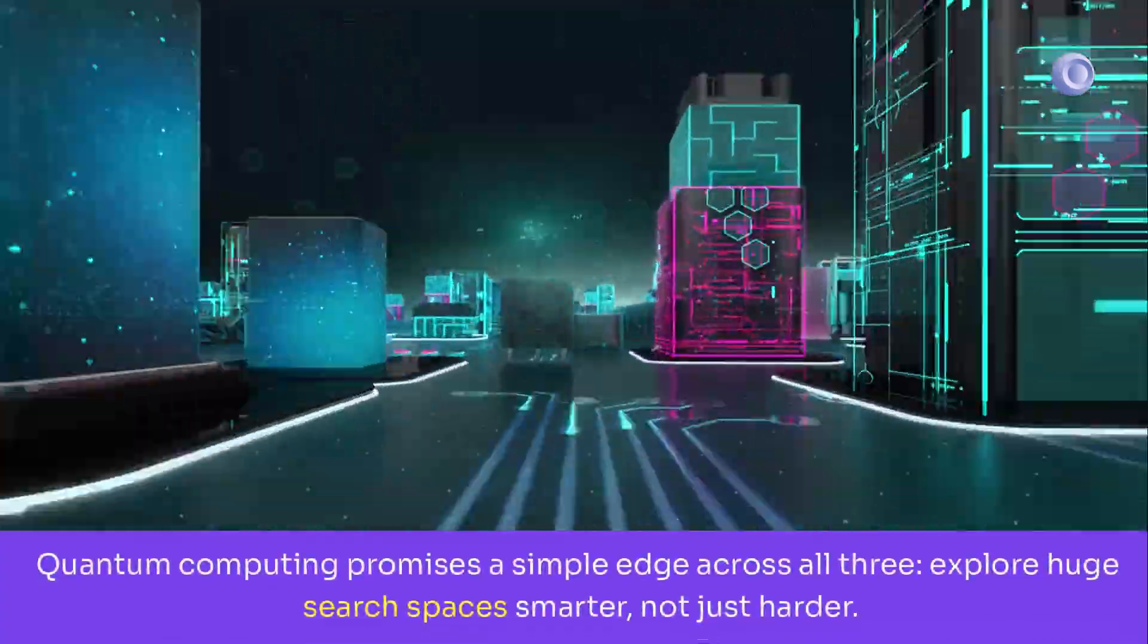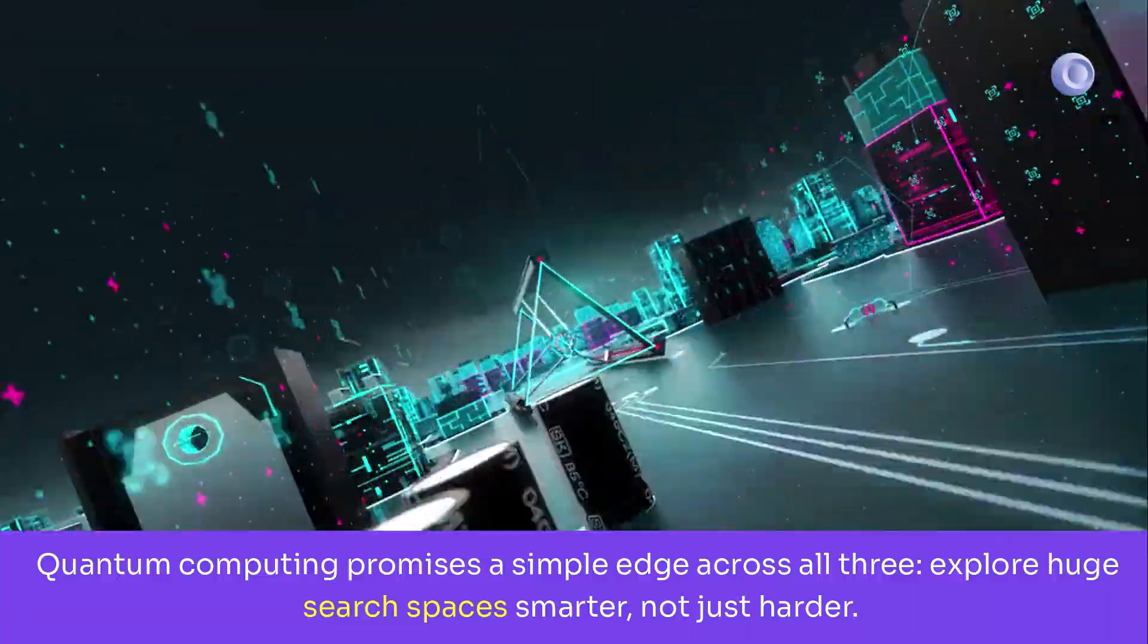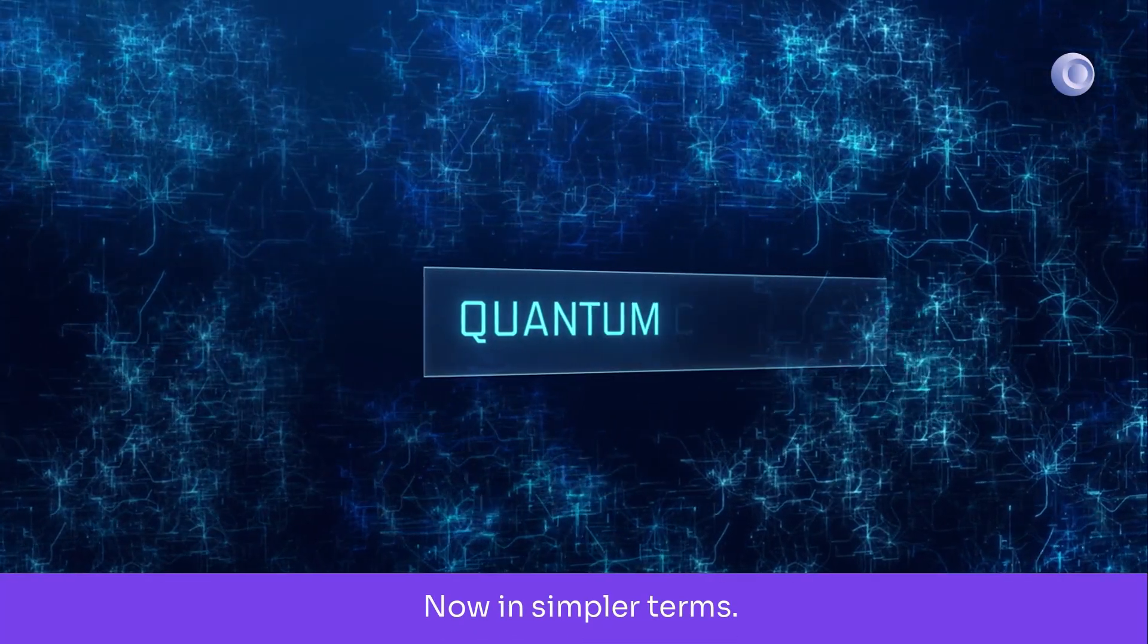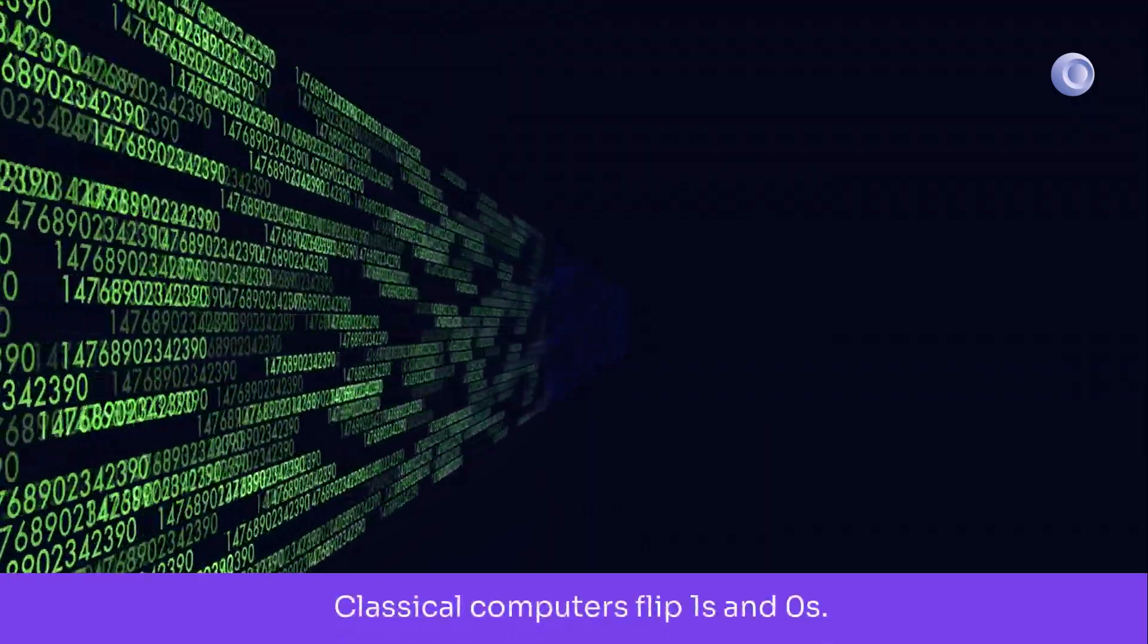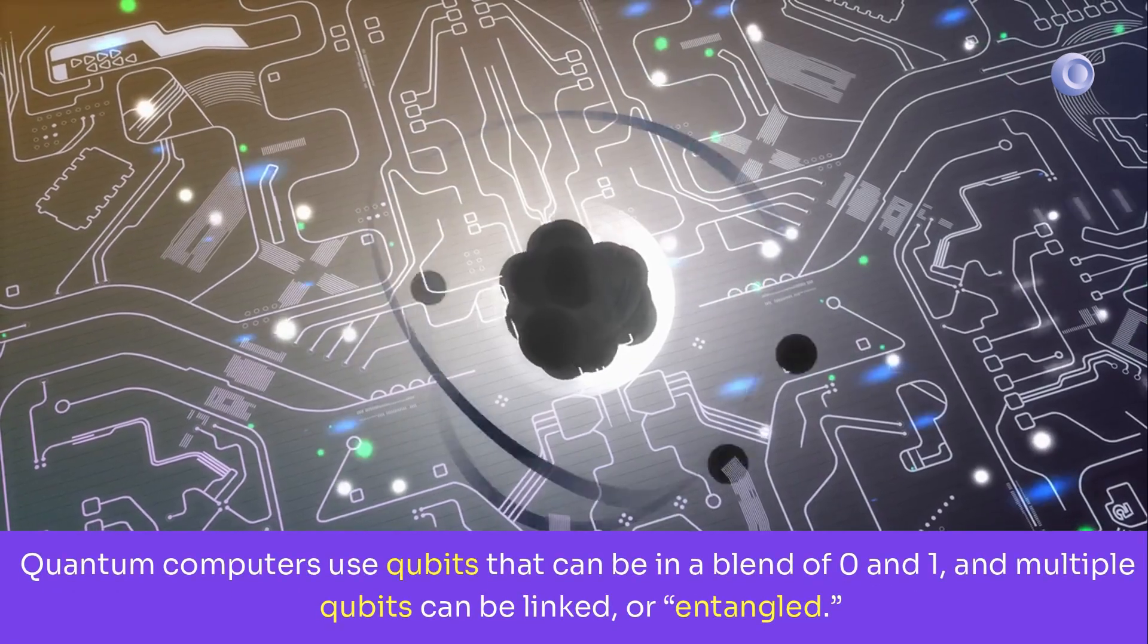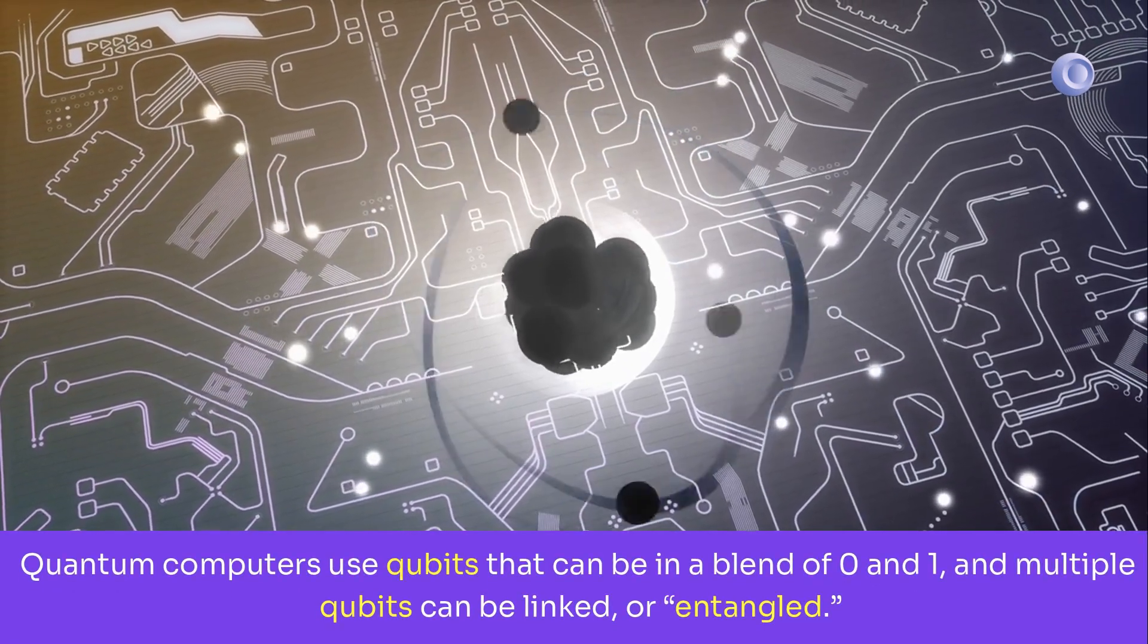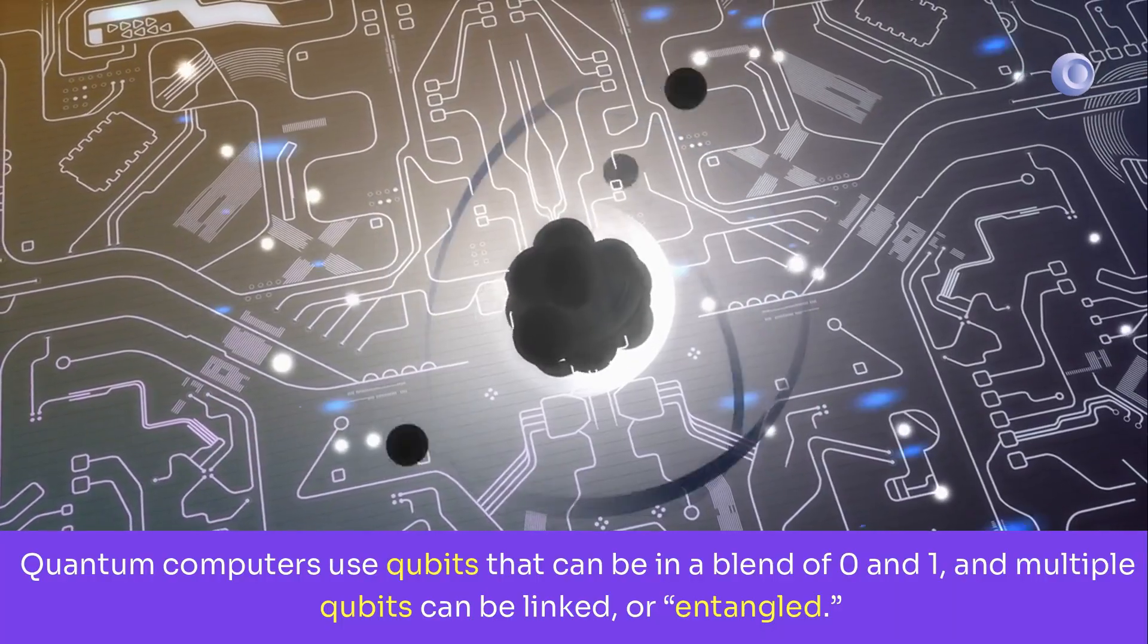Explore huge search spaces smarter, not just harder. Now in simpler terms, classical computers flip ones and zeros. Quantum computers use qubits that can be in a blend of zero and one, and multiple qubits can be linked or entangled.